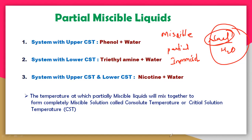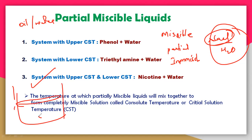Immiscible means the miscibility is not there at all — the substances do not dissolve completely and will form two layers. For example, oil in water or kerosene in water forms an upper layer and a lower layer. Immiscible liquids give a heterogeneous mixture with two separate layers.